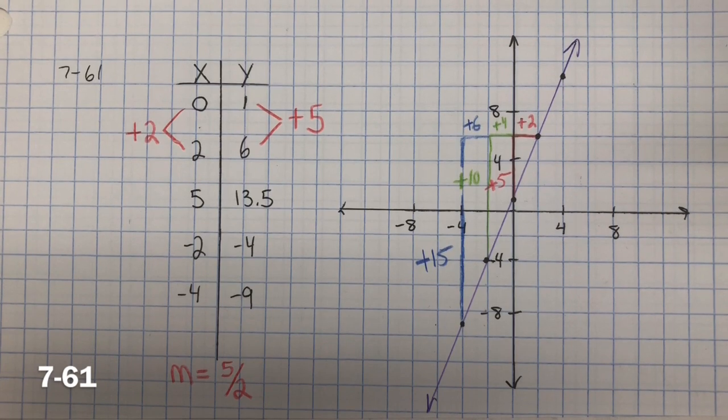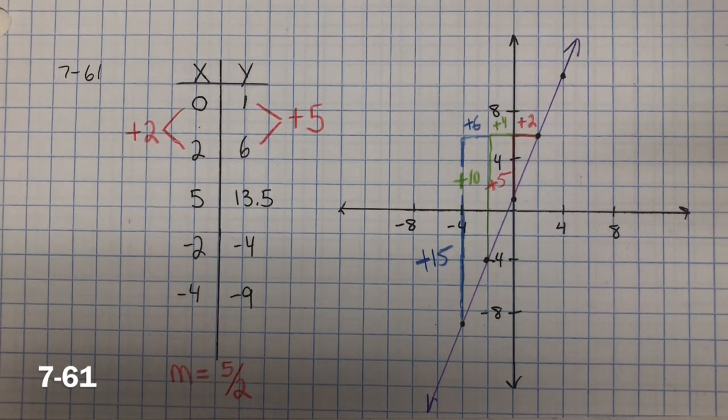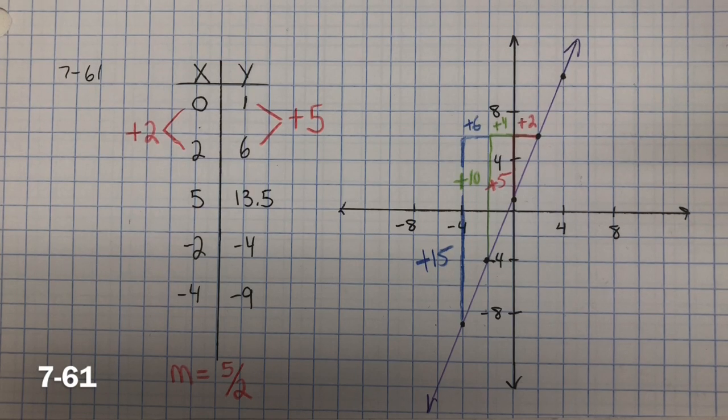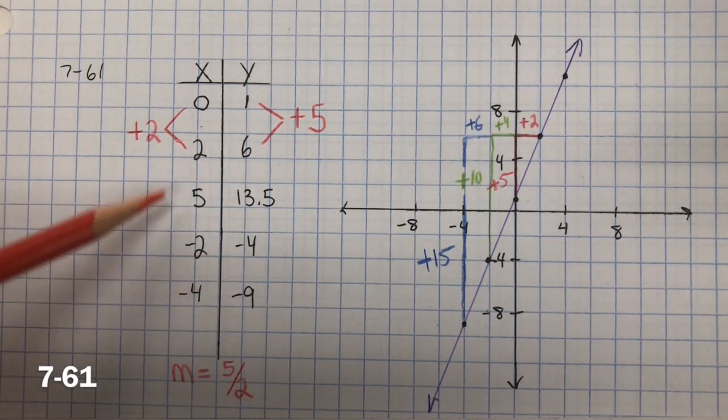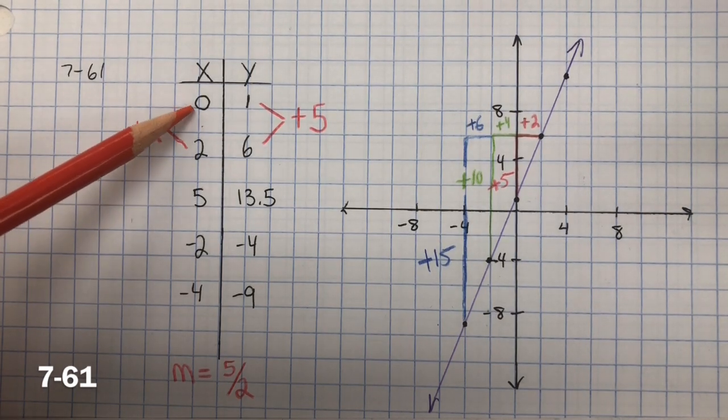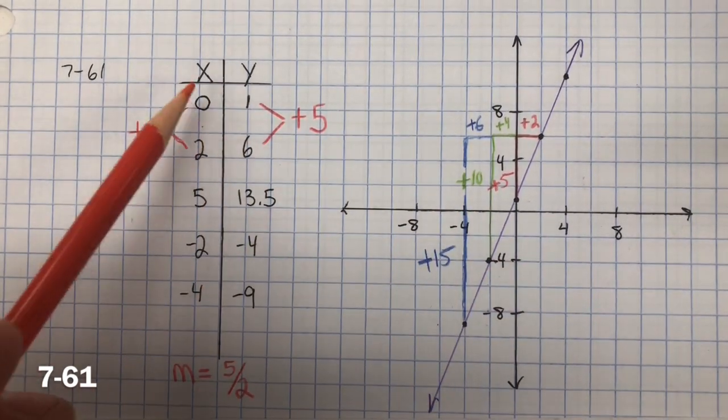In problem 7-61, you need to graph the points in the table and draw a line. Then find three different ratios to describe the slope of this line. Here are the points in the table. Now we're going to graph each of these points on the line.